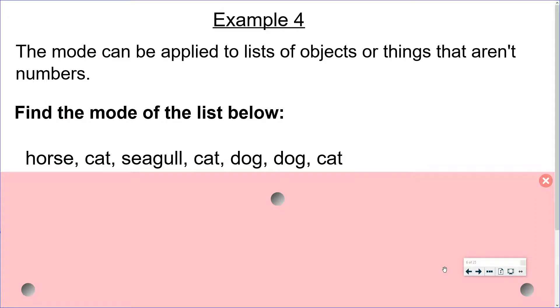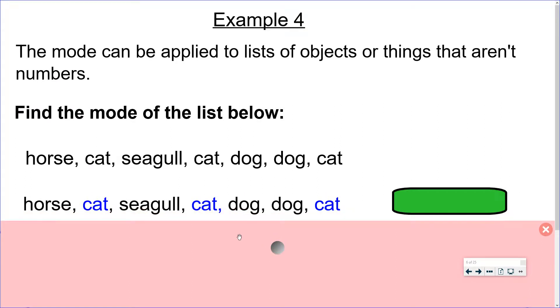Example 4. The mode can be applied to lists of objects or things that aren't even numbers. Find the mode of the list below. So we've got some animals here: horse, cat, seagull, cat, dog, dog, cat. So to work out the mode we just have to work out which one occurs the most. And we can see that cat occurs three times. So the mode is the cat because it is clearly the best animal.